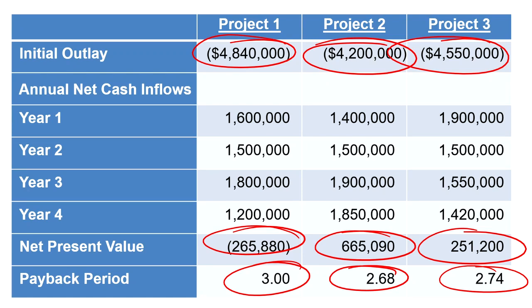Project one has a negative net present value and the payback period is exactly three years. Because we have a negative net present value, we're not going to be investing in project one. The payback period didn't say specifically if it had to be less than or exactly three years, but because we have a negative net present value, the payback period really isn't going to come into it. So it looks like we're going to have to make a decision between project two or project three.